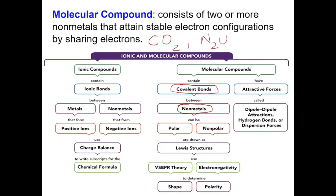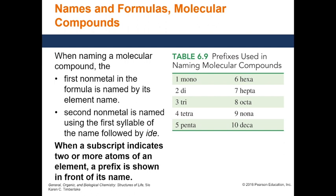N2O5 — nitrogen is a non-metal, oxygen is a non-metal. PCl3 is a molecular compound because phosphorus is a non-metal and chlorine is a non-metal. So how do we write the name and formula for a molecular compound?